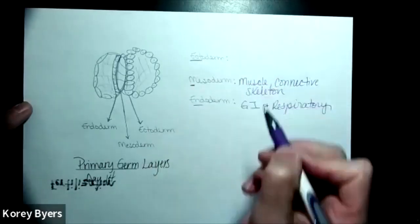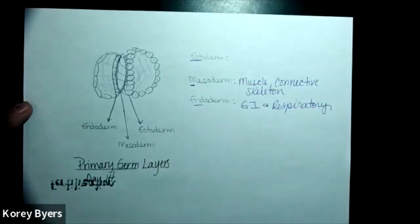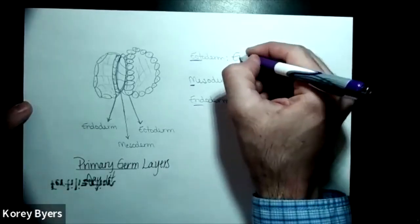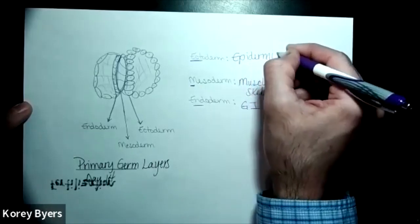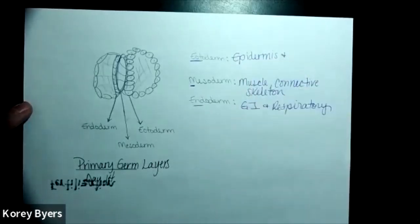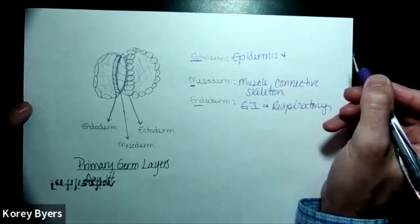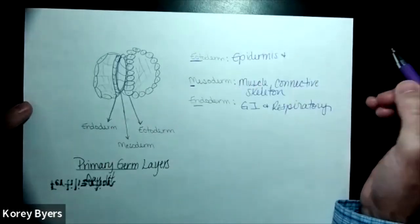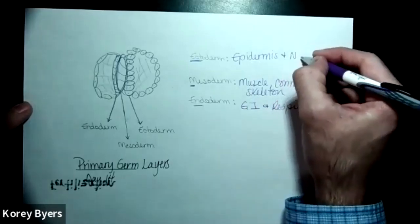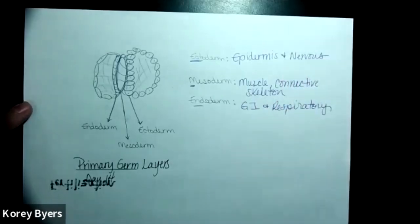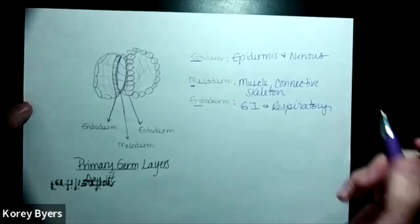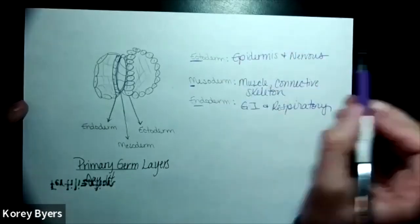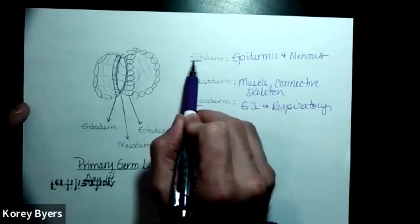Well, ecto, if you think ecto like ectopic outside, this becomes things like your epidermis. And then we've already talked about this a little bit. We did our story about melanin and why that was important, protecting the cell, et cetera, vitamin D. We had a whole little talk about it, but epidermis and your nervous tissue actually form from that same layer. We talk about folic acid and all of that. I won't bore you with the story again, but epidermis and nervous tissue form from that same ectodermal layer.